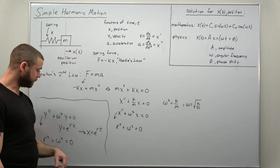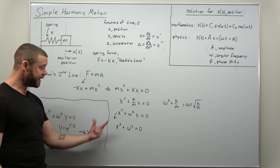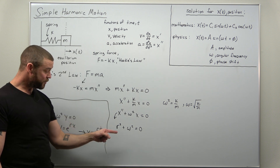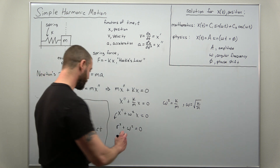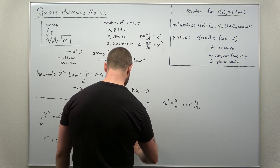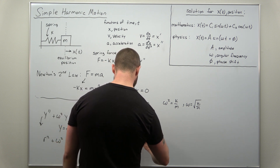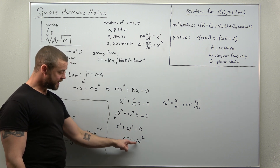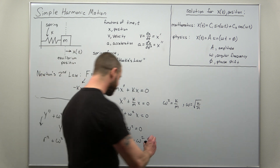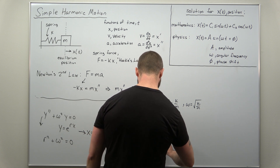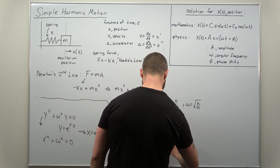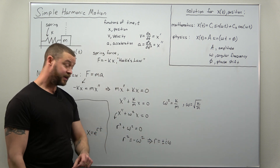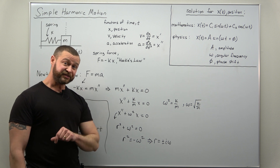All the usual tricks still apply — you can factor the exponential out from all the terms. We get our characteristic equation, which we can easily solve. Subtracting omega squared and taking a square root, since we have a negative, this leads to imaginary values. We get our characteristic roots as plus or minus i omega.